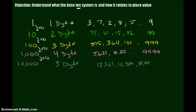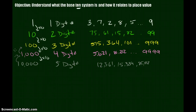And in the same way, if you wanted to go from 10,000 down to 1,000, the opposite of times 10 is divide by 10. To get from 1,000 to 100, you divide by 10. To get from 100 to 10, you divide by 10. And to get from 10 to 1, you divide by 10. That's the basis of the base 10 system.